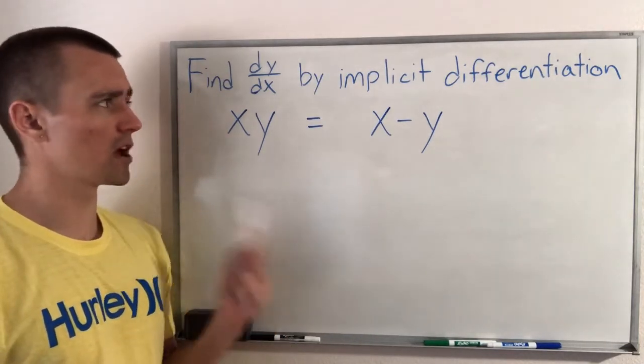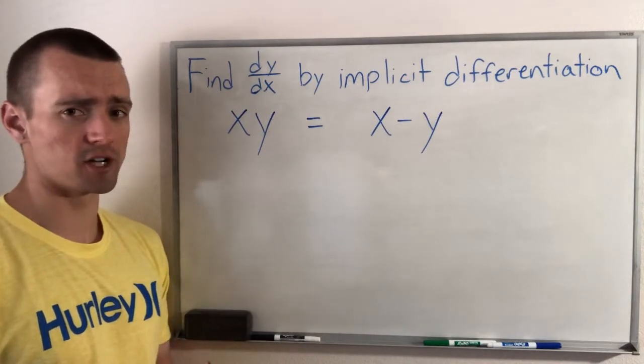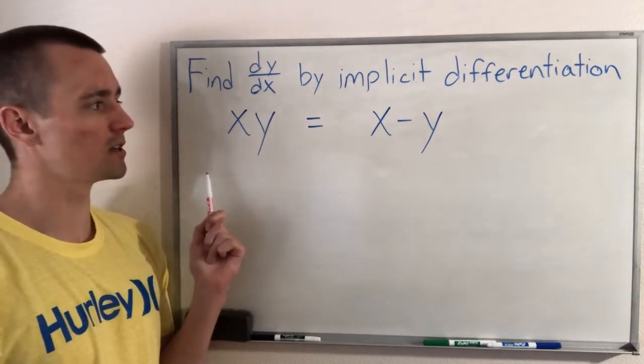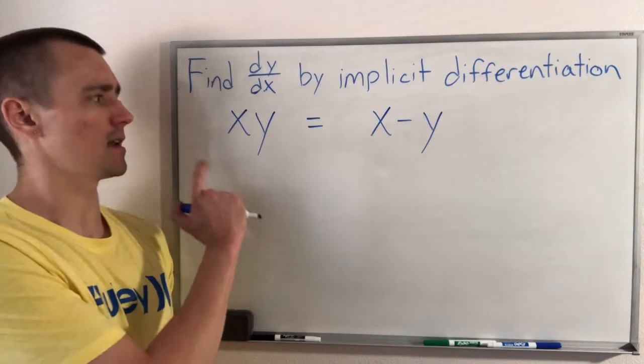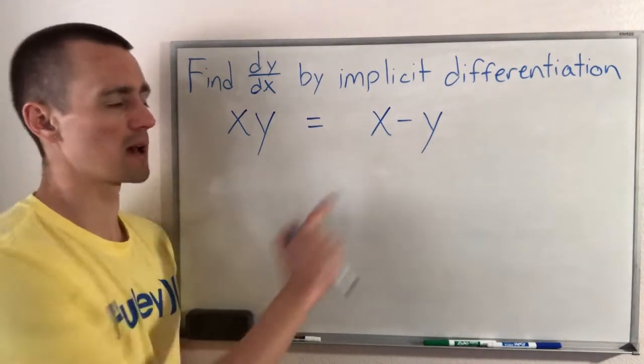So the problem we're going to be doing is find dy/dx by implicit differentiation. And we're going to be finding dy/dx given that x times y equals x minus y.